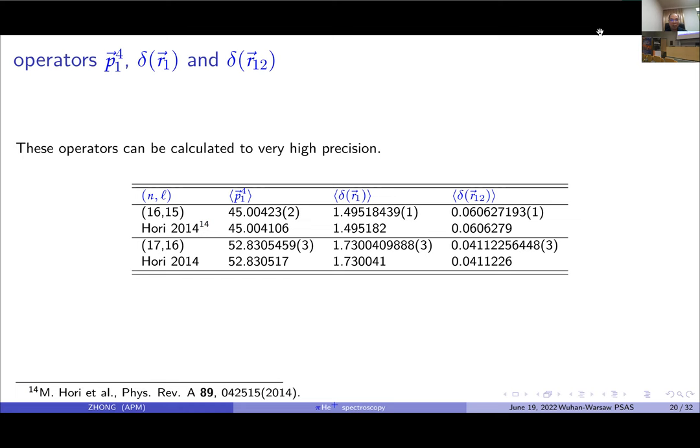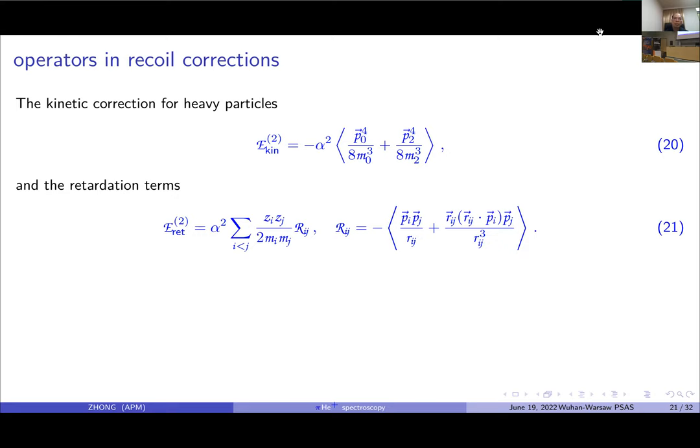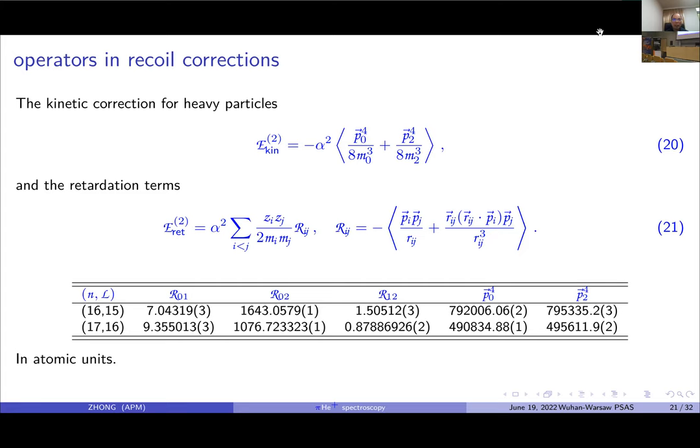We also consider recoil corrections in the leading order relativistic corrections. The first one is kinetic correction for heavy particles and retardation terms. Here is our results in atomic units.